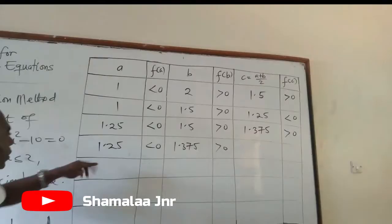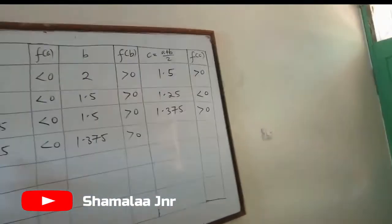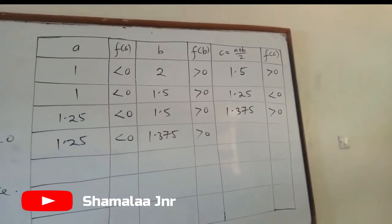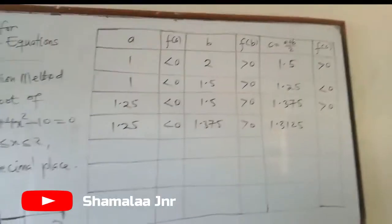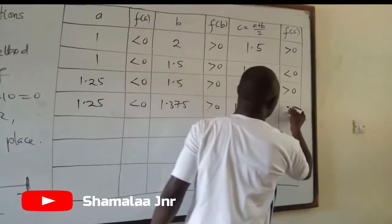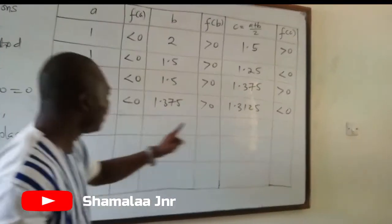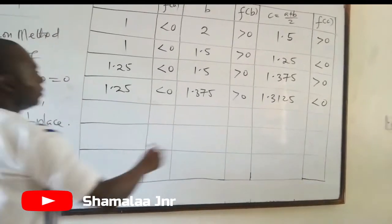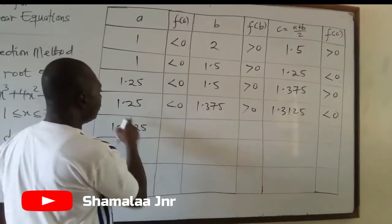To continue, you find the average of 1.25 and 1.375 and write it at C. So (1.25 + 1.375) / 2 gives 1.3125. Then again you find the functional value of 1.3125, which is less than 0. Because this is less than 0, it replaces 1.25, whose functional value is also less than 0. So 1.3125 comes here to replace 1.25.